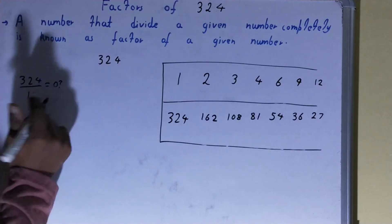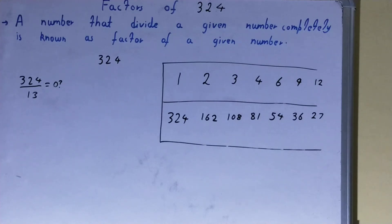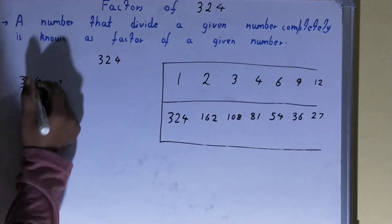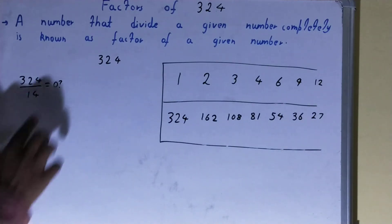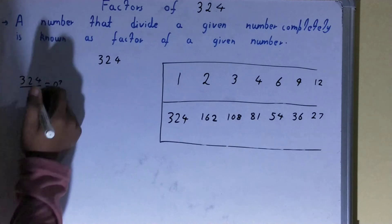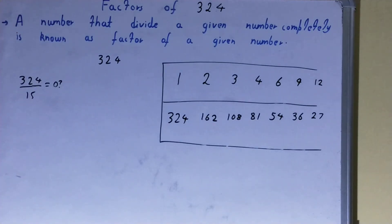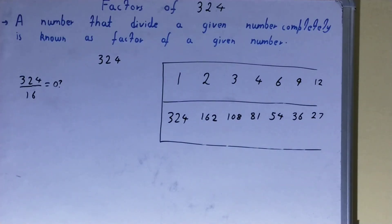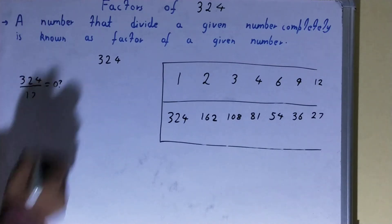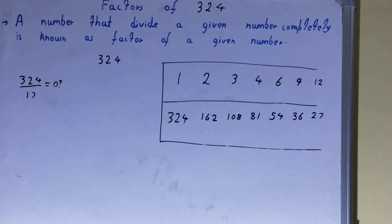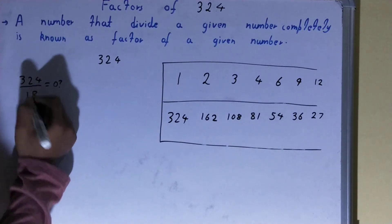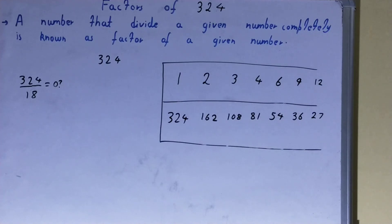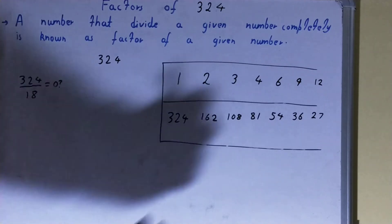After 12, we check 13, 14, 15, 16: none are factors. We check 17: not a factor. We check 18: 18 × 18 = 324, so 18 is a factor.